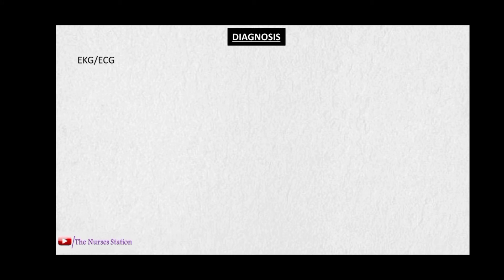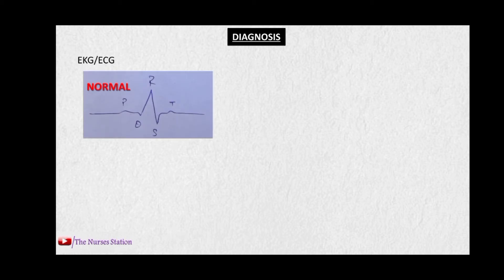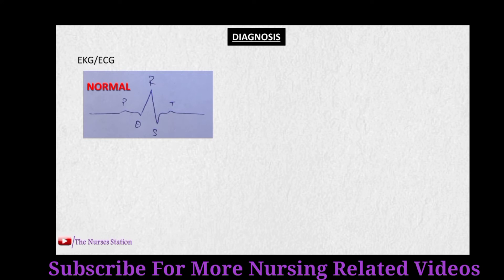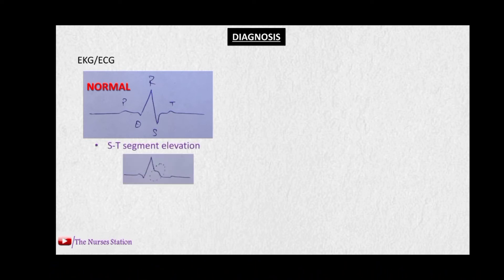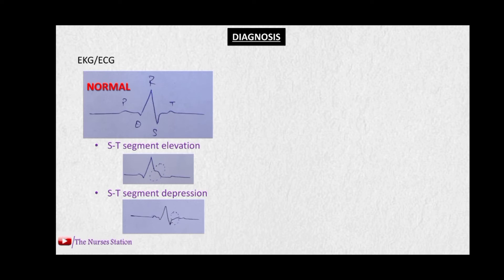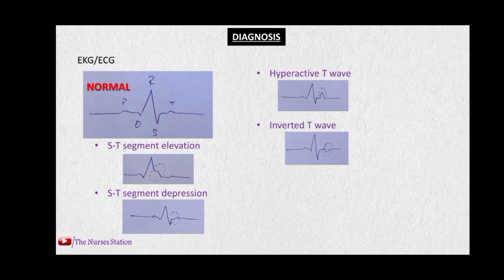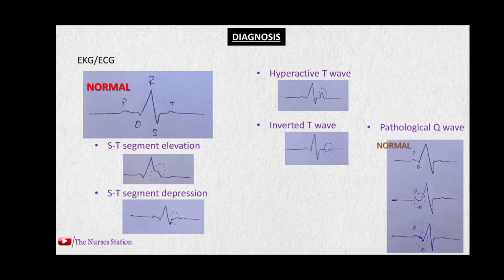To diagnose myocardial infarction, we first use the EKG or ECG. In MI, there are several abnormal changes in the ECG wave. The first is ST segment elevation, which indicates injury to the myocytes or myocardium. ST segment depression occurs where the ST segment falls below the isoelectric line. The hyperactive T wave and the inverted T wave — along with ST segment depression — indicate ischemia to the heart muscle cells. The pathological Q wave is above or below the normal position.